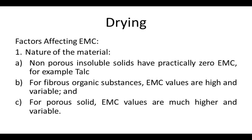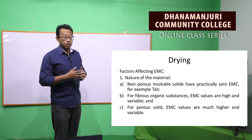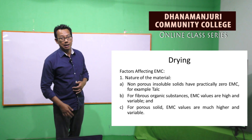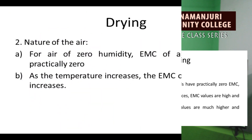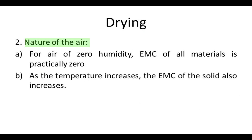There are two factors that affect the EMC value of any substance. Number one is the nature of the material. This can be of three kinds: one, non-porous insoluble solids like talcum powder which have practically zero EMC; two, fibrous and organic substances for which EMC values are high and variable; three, porous solids where EMC values are much higher and variable because moisture can be entrapped in their voids and can pass in and out of the solid surface. The second factor is the nature of the air. For zero-humidity air, the EMC of all materials is practically zero. As temperature increases, the EMC value of the solid also increases.